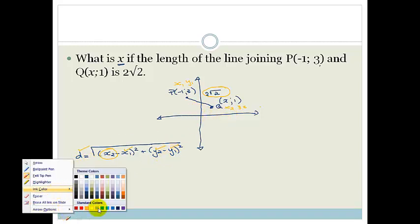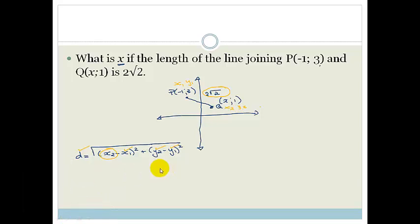So again, I'm just going to change colors because that orange or yellow is a bit difficult to see against the screen. And let's do the sum. So we go. The d is, the distance is 2 root 2 is equal to the square root of x minus minus 1 squared plus y2, which is 1, minus 3 squared, all squared.